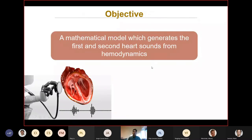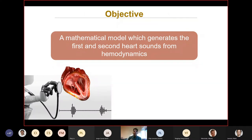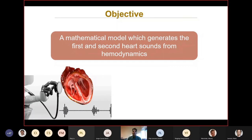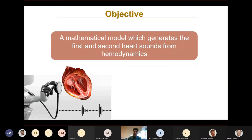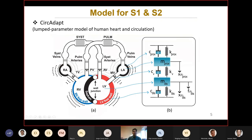The objective of this work is to propose a mathematical model which generates the first and second heart sounds around hemodynamics. In this figure, here you see CircAdapt. It's a lumped parameter model of human heart and circulation. You see chambers here: left atrium, mitral valve, left ventricle, right ventricle, aortic valve, pulmonic valve, tricuspid valve, and right atrium.